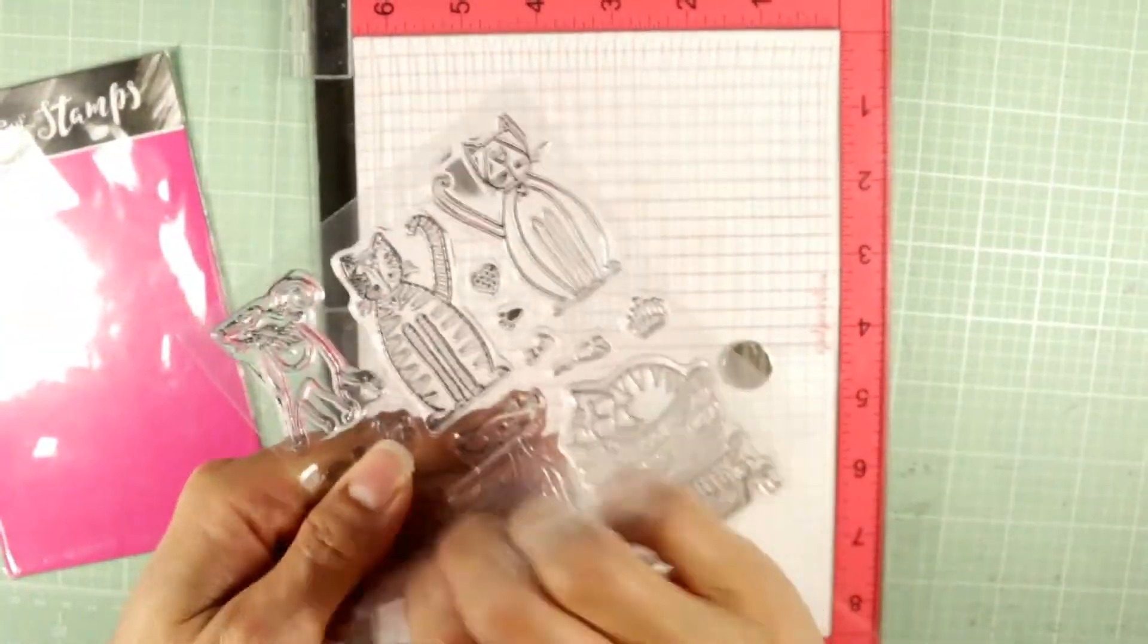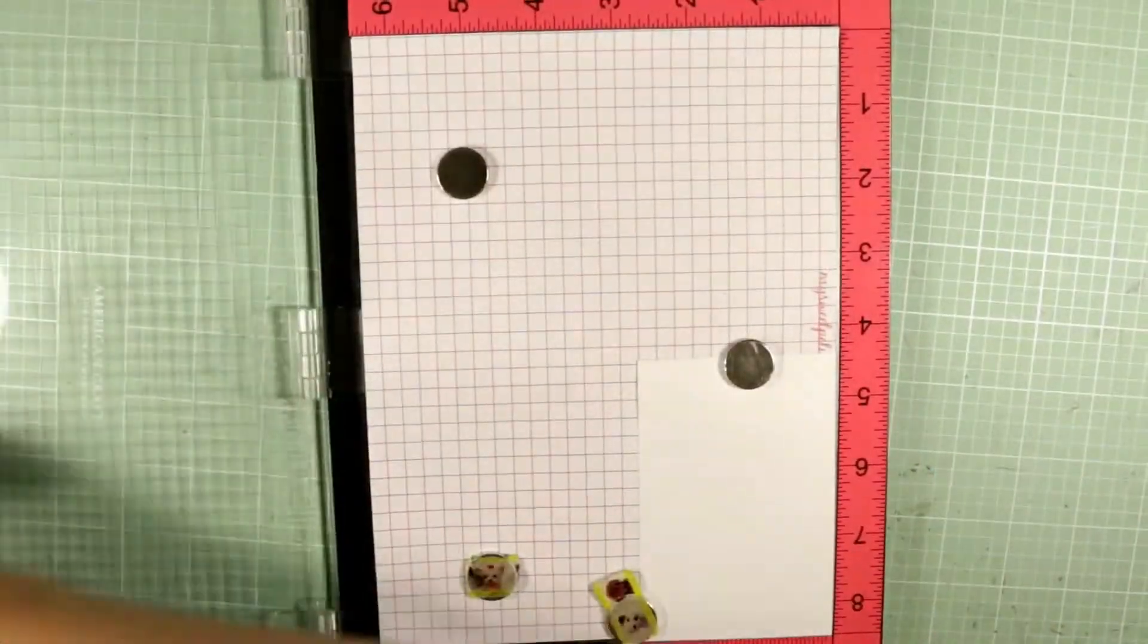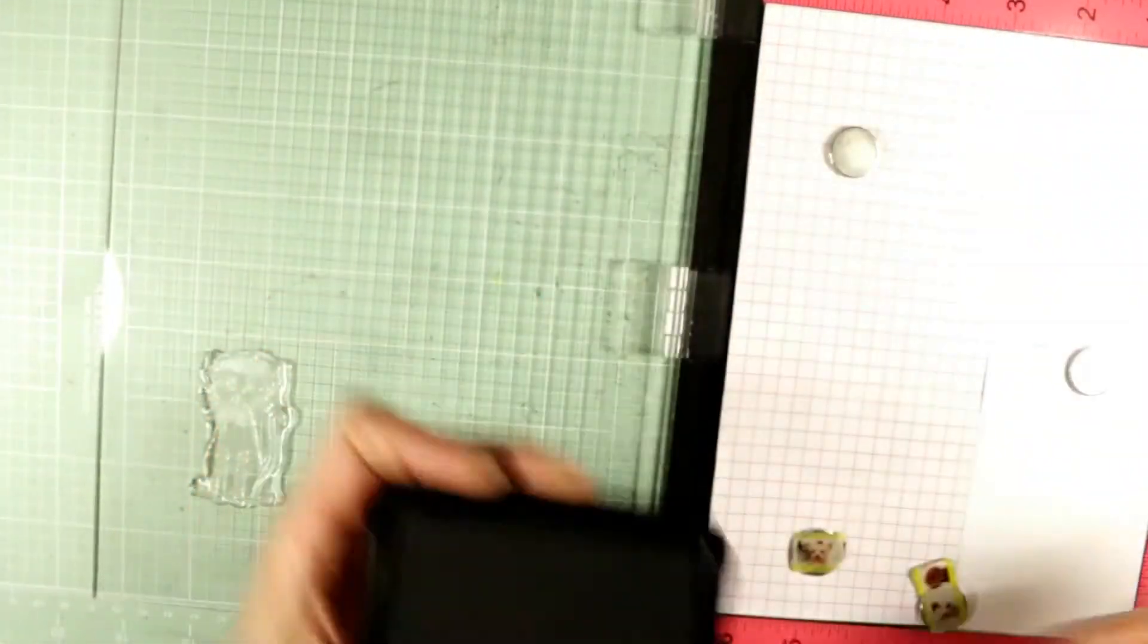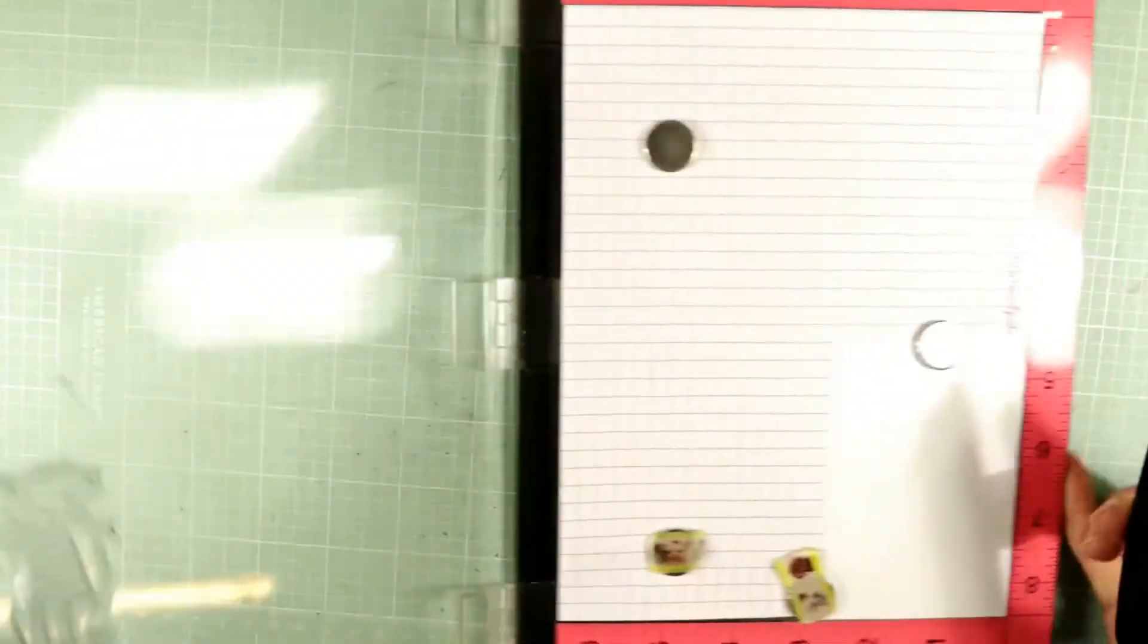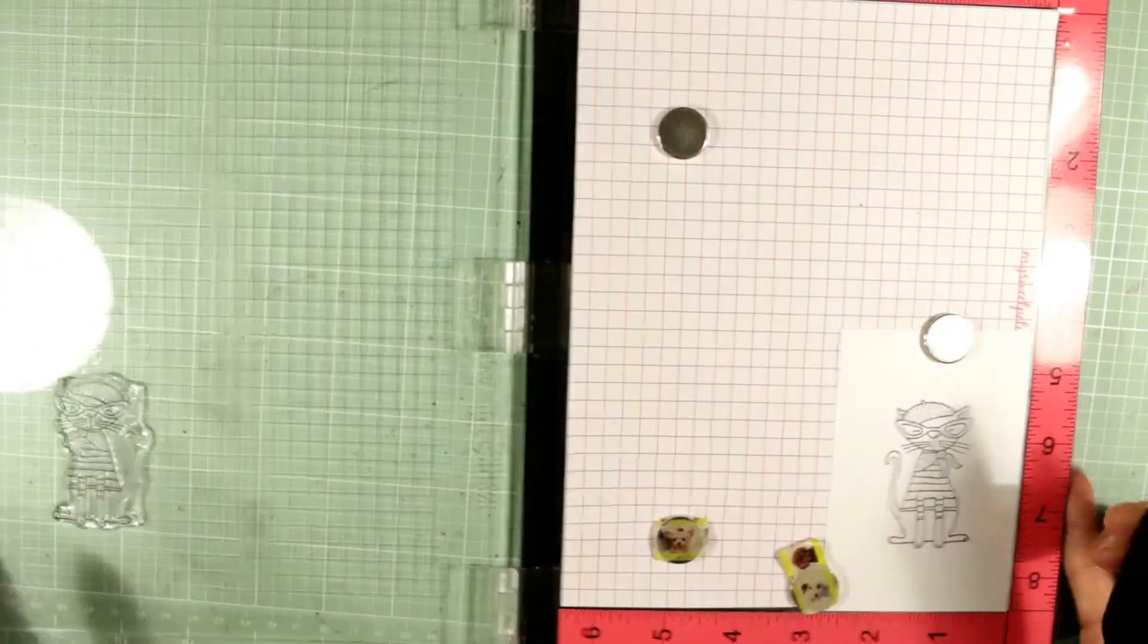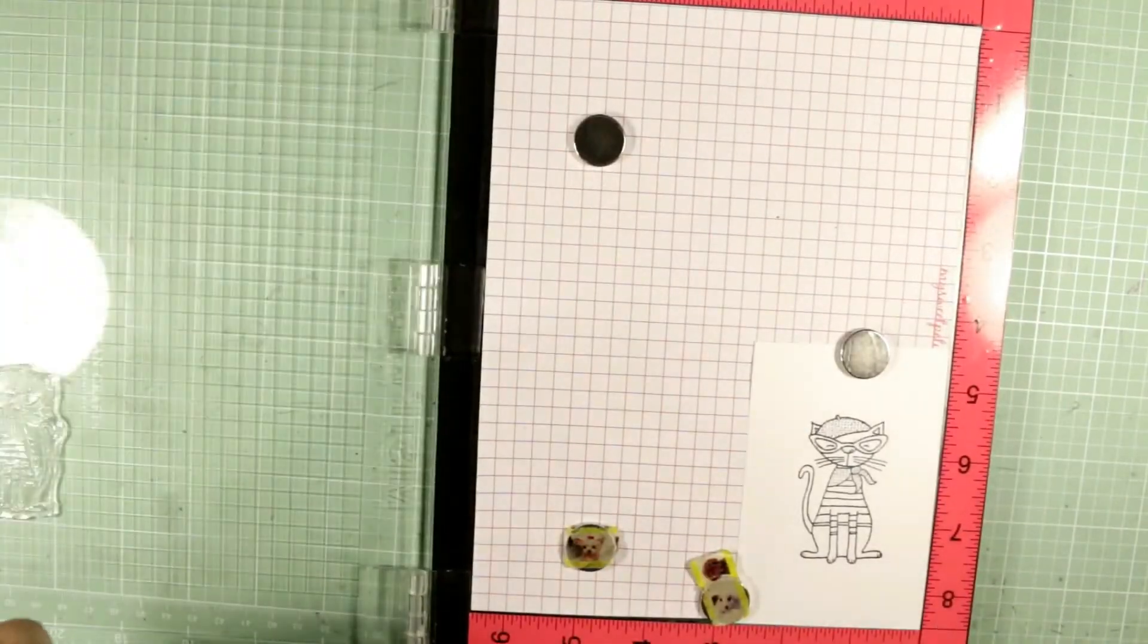Now I'm using this adorable Parisian kitty, and I'm stamping it out using my Misti tool because it's a brand new stamp and I wanted to make sure I got a clean, crisp image. So you see me stamping it out twice there, and using that Misti tool really helps.